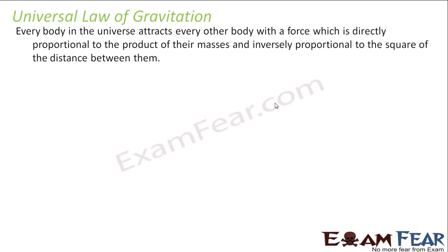The universal law of gravitation states that every body in the universe attracts every other body with a force which is directly proportional to the product of the masses and inversely proportional to the square of the distance between them. Newton said that every object we see — human beings, tables, chairs, furniture — every object attracts every other object.